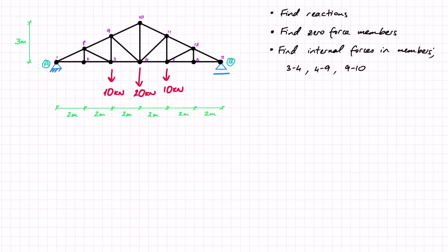This is the truss that we're going to solve. We've got 12 joints, two supports: a pin support at A and a roller support at B. We've got three point loads at joints 3, 4 and 5. We're going to solve the reactions, find the zero force members, and then find the internal forces in members 3-4, 4-9, and 9-10.